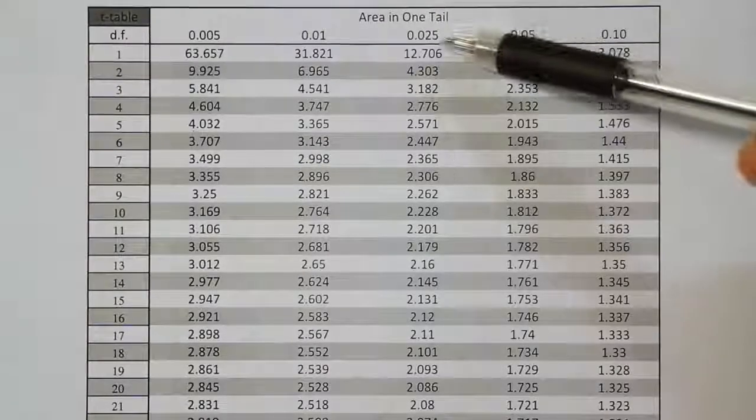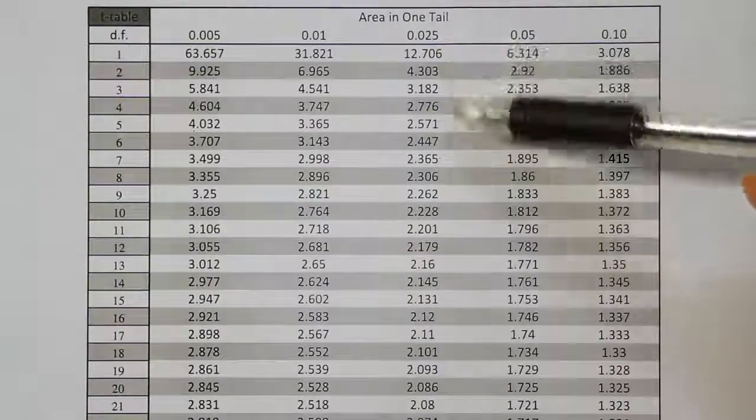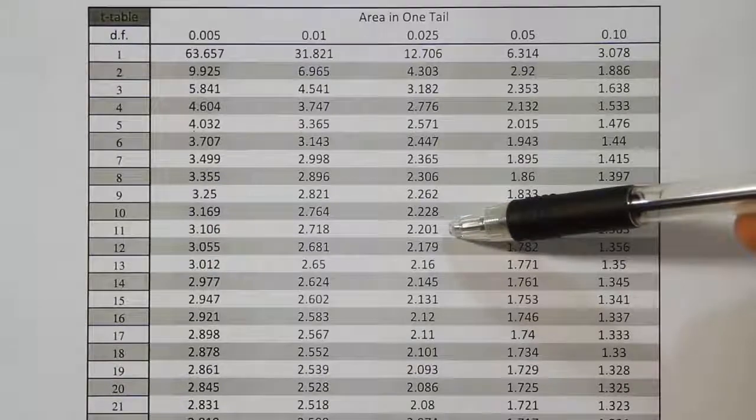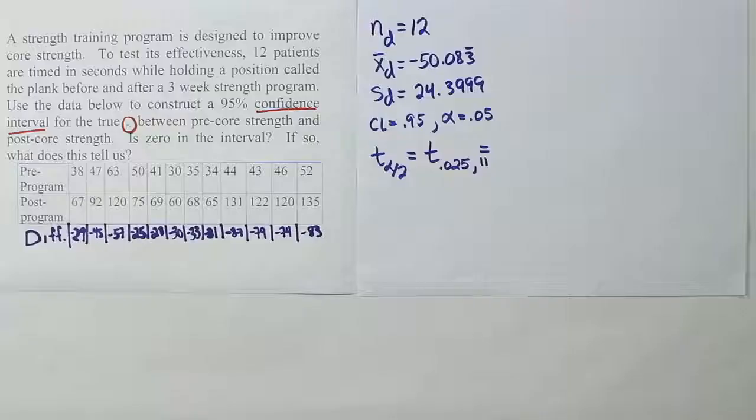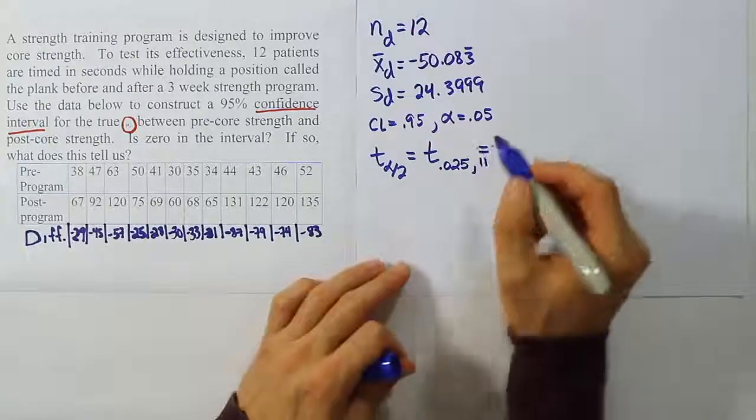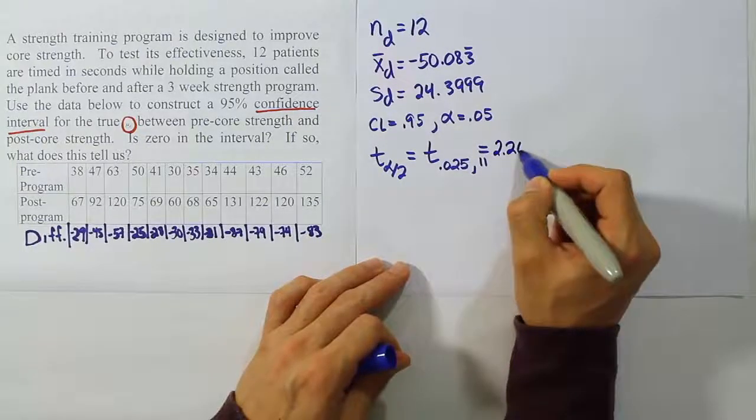Okay, so we're looking at 0.025 and 11 degrees of freedom. We find the answer 2.201. So our table value is 2.201.